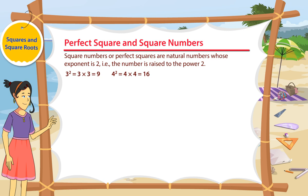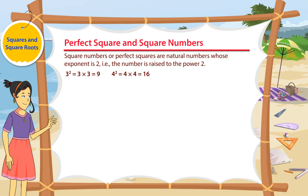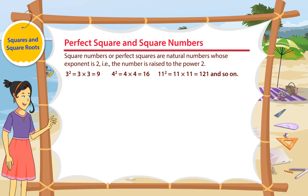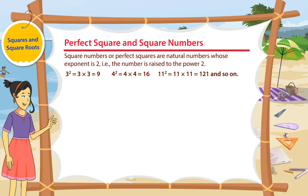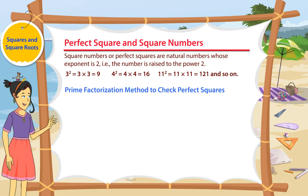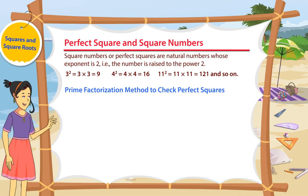4 square is equal to 4 into 4, which is equal to 16. 11 square is equal to 11 into 11, which is equal to 121, and so on.